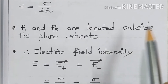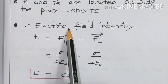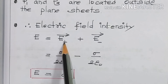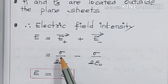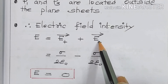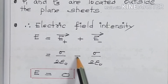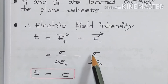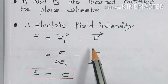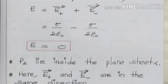P1 and P3 are located outside the plane sheets. Therefore the total electric field intensity E = E-plus vector + E-minus vector. E-plus = σ / 2ε₀, but E-minus is equal in magnitude and opposite in direction, so we write minus σ / 2ε₀. The plus and minus terms cancel, and the electric field becomes zero outside the plane sheets.